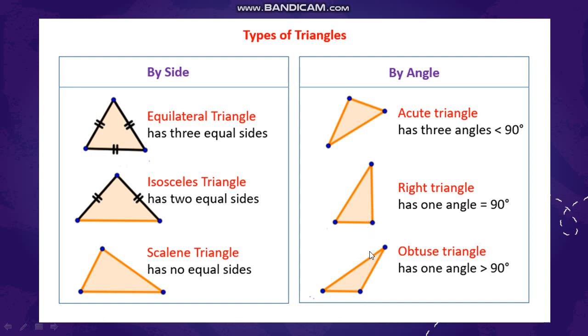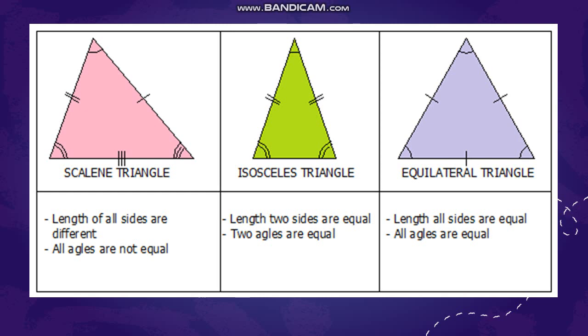Then the obtuse triangle. An obtuse angle triangle is a triangle which has one obtuse angle. Let us see the next slide.